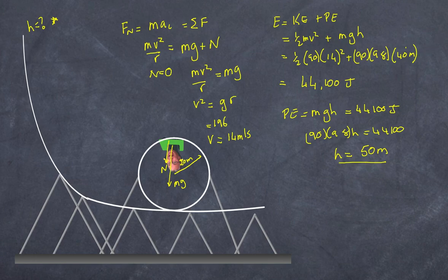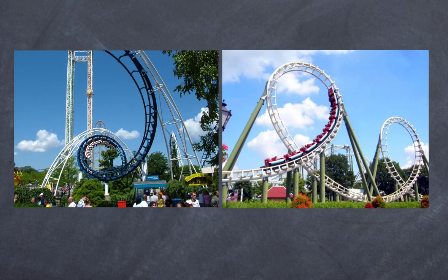Roller coasters are of course a lot more complex than this. For example, they may have a corkscrew, or they may not be perfectly circular — there are shapes designed to keep the g-forces constant around the loop, or to keep the centripetal acceleration constant. That's a bit more complex and probably best left for another video.